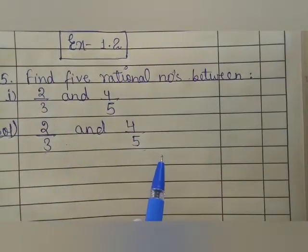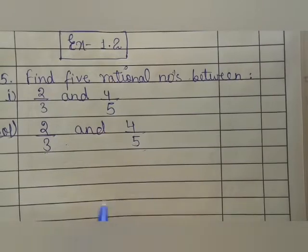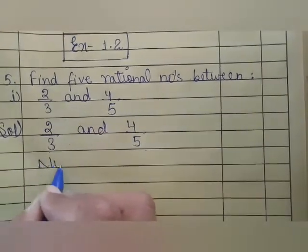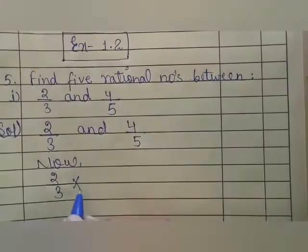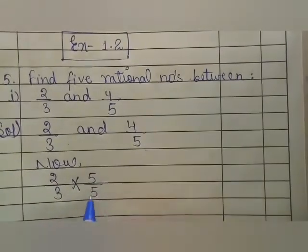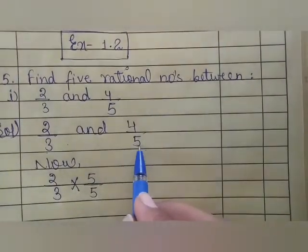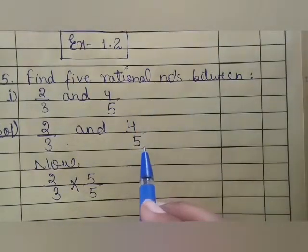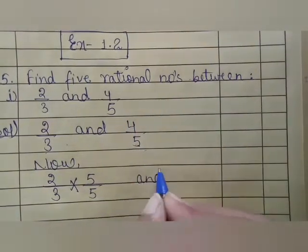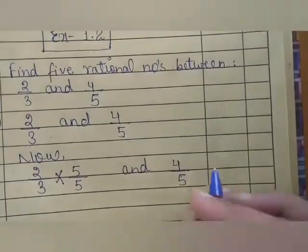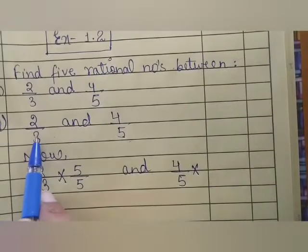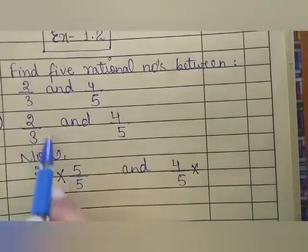The denominator of the numbers will be the same. Now, we will multiply 2 upon 3 by 5 upon 5 because 5 is the denominator of 4 upon 5, and we will multiply 4 upon 5 by 3 upon 3 because 3 is given here.